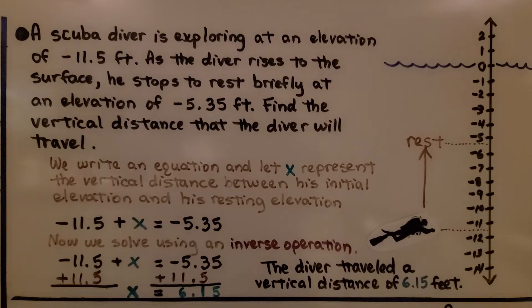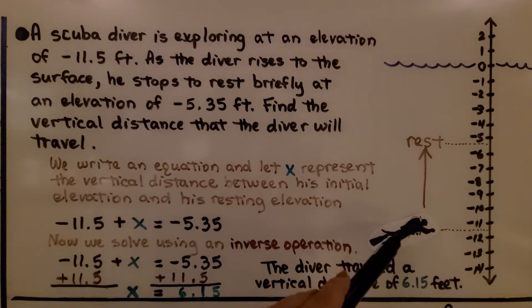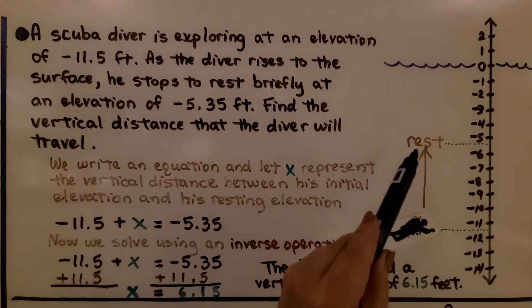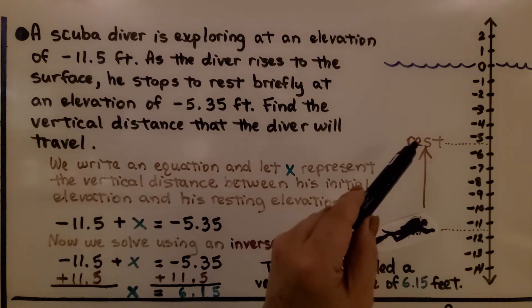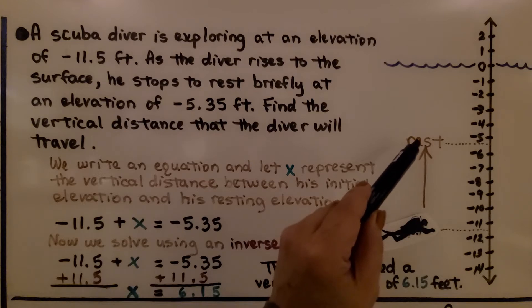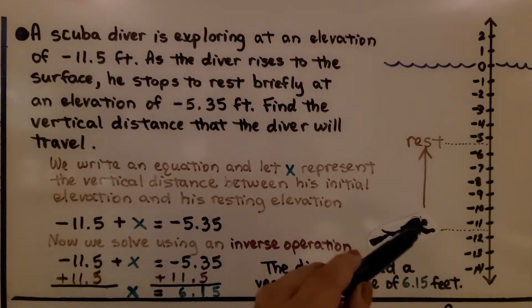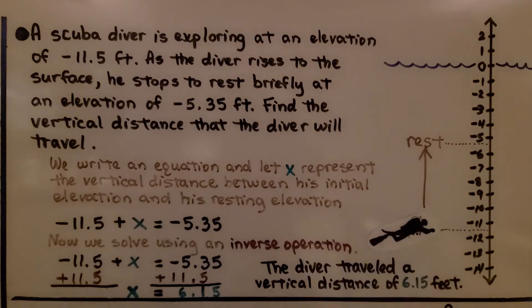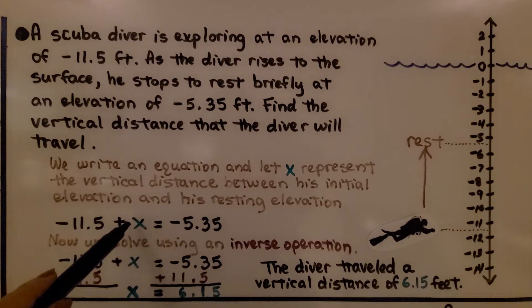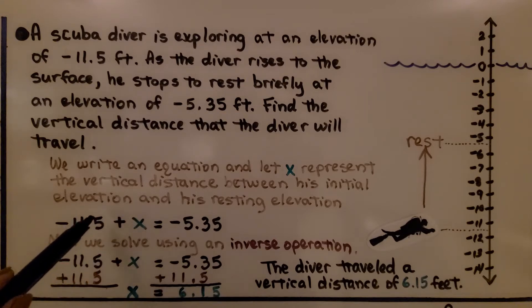A scuba diver is exploring at an elevation of negative 11.5 feet. As the diver rises to the surface, he stops to rest briefly at an elevation of negative 5.35 feet. We need to find the vertical distance the diver will travel. We write an equation and let x represent the vertical distance between his initial elevation and his resting elevation.